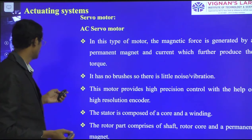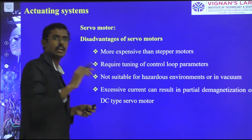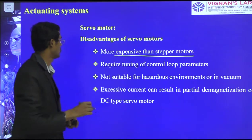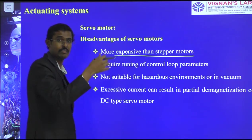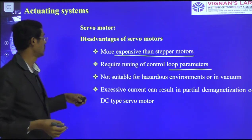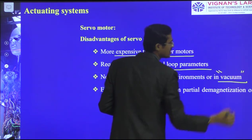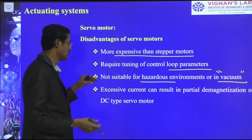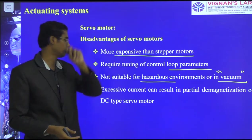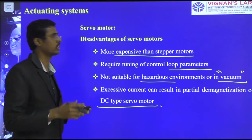Disadvantages of servo motors: when the rotation and shift angle are reduced, they become more expensive than stepper motors. A minimum shift angle of 0.7 degrees or less is possible but requires tuning of closed-loop control parameters. They are not suitable for hazardous environments. The excessive current can result in partial demagnetization of the DC-type servo motors. These things are to be kept in mind for actuating systems.